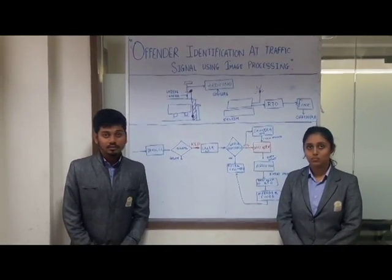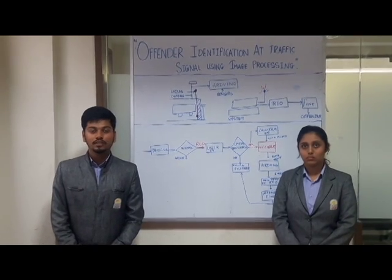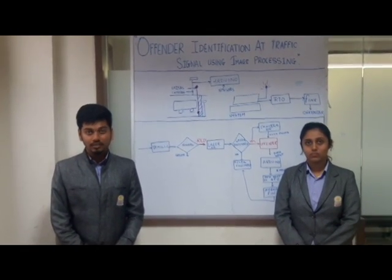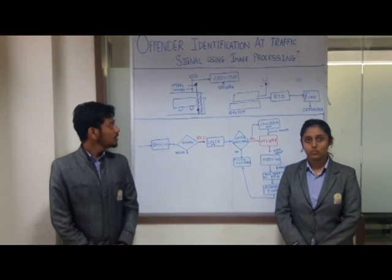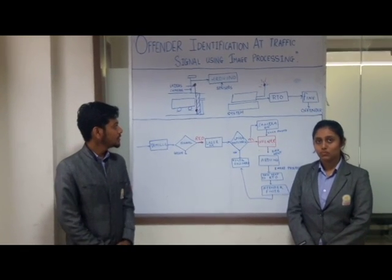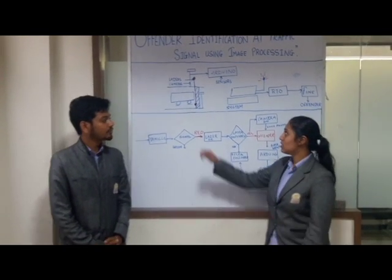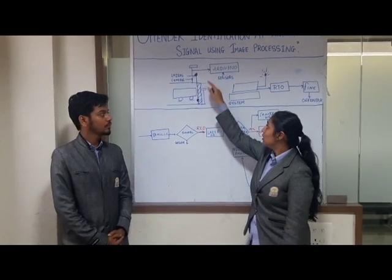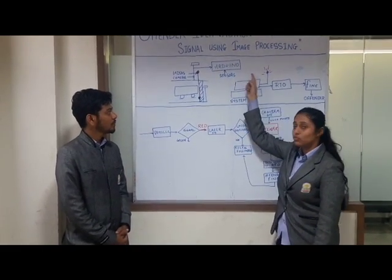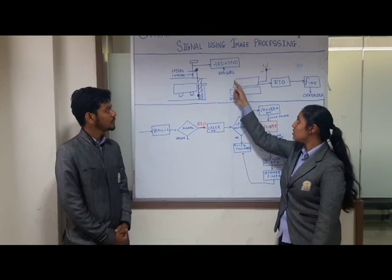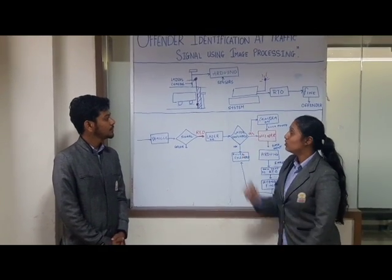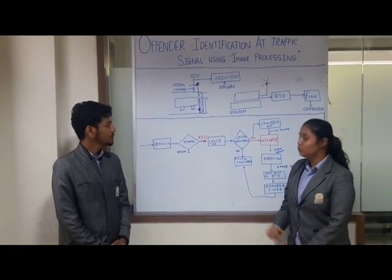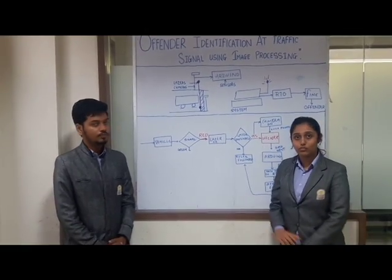As explained before, traffic rules and signals are not followed when traffic police are absent. These are the lasers situated at intervals along the road. The lasers are connected to the Arduino, and various sensors are also connected to it. The Arduino is the head of the architecture — its role is to switch the laser on and off.